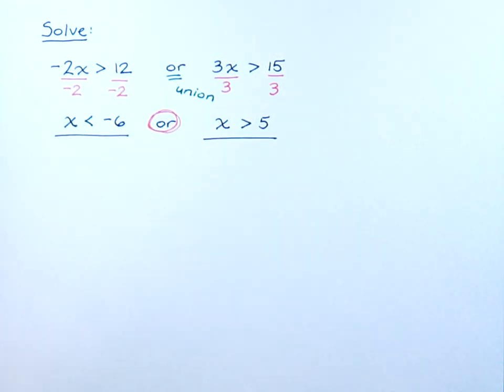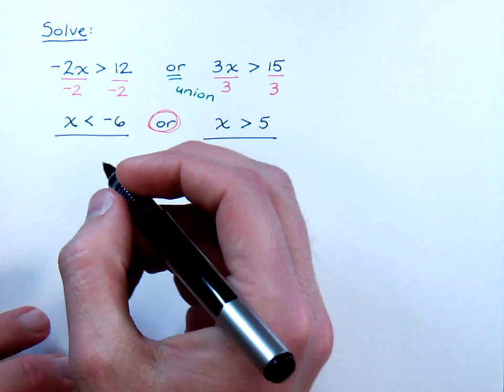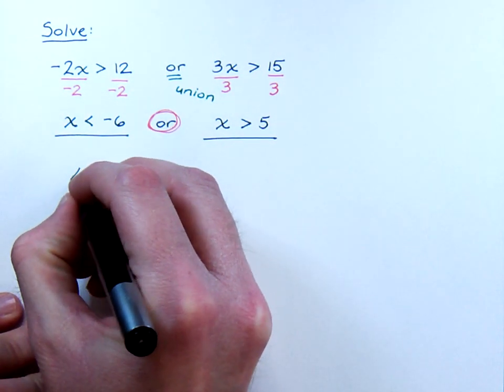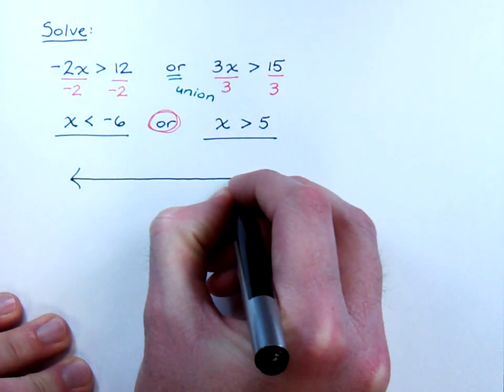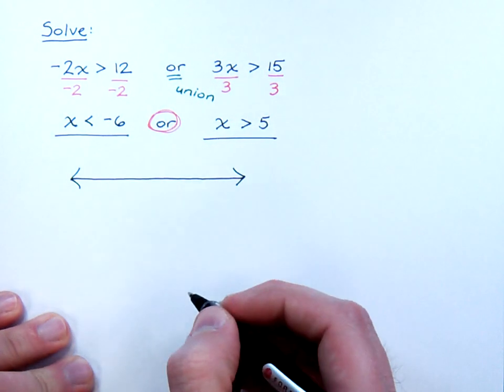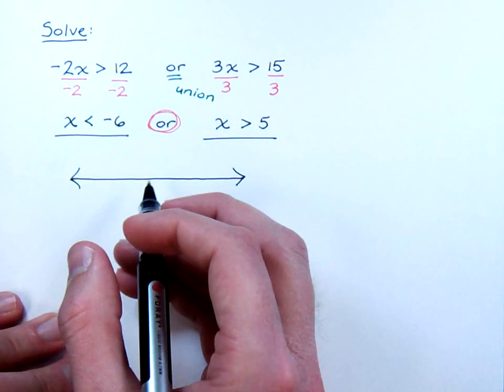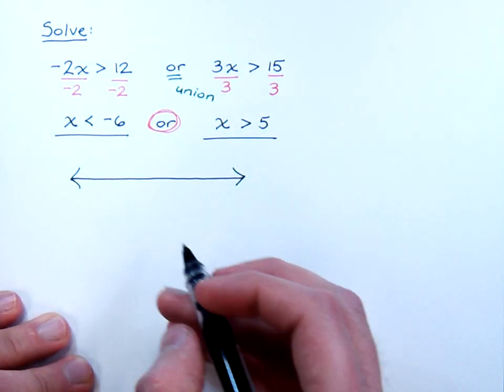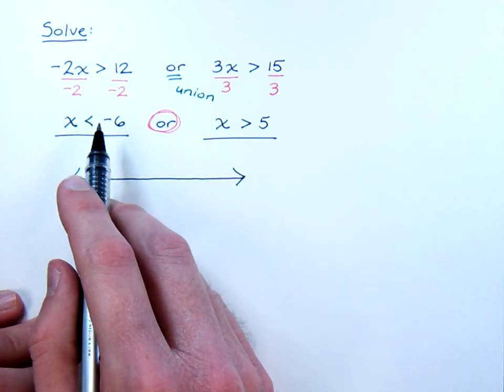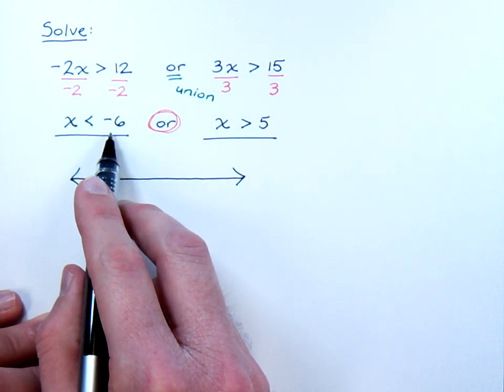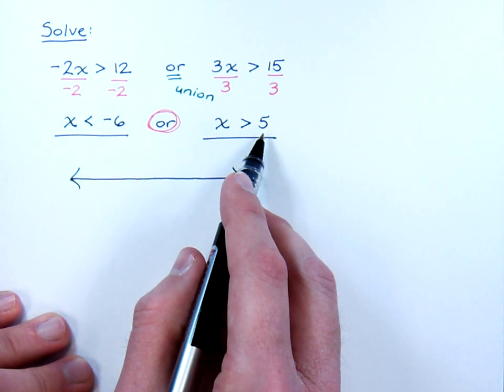Well, as we saw in the previous video, we need to graph both of these on the same number line, and then we're going to take what we have on the graph and convert it to interval notation. Now, if we look here, make sure you understand the numbers you're working with. You're working with negative 6, and you're working with 5.